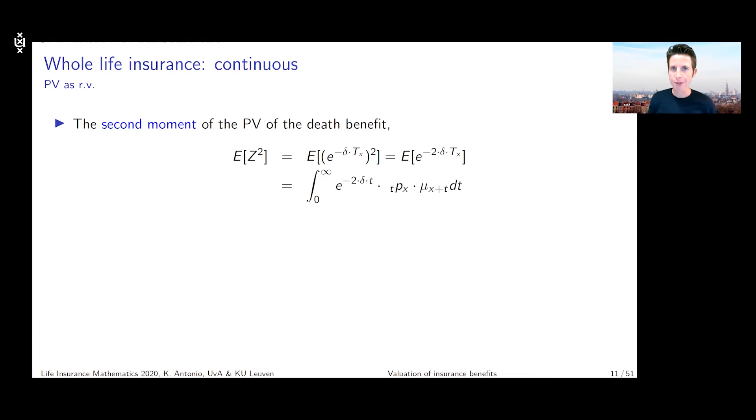We could value this as the integral from zero to plus infinity of e to the power of minus two times delta times t, and then multiply it with the density function of Tx evaluated in t. The actuaries developed yet another symbol to denote this in shorthand notation. We see the same symbol as before but we've got a two at the left hand side at the top. This two refers to the fact that you should use two times the interest force delta.